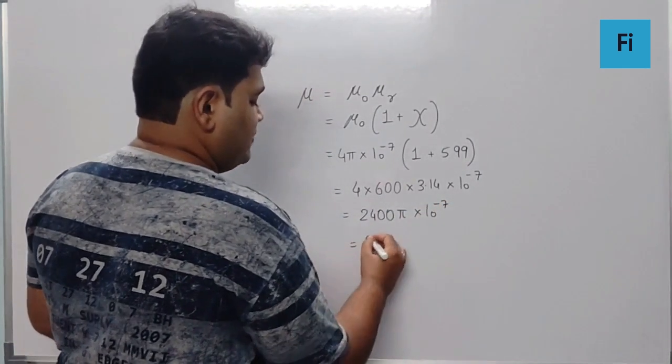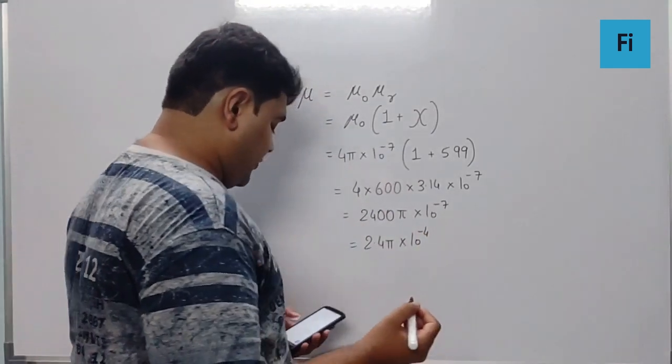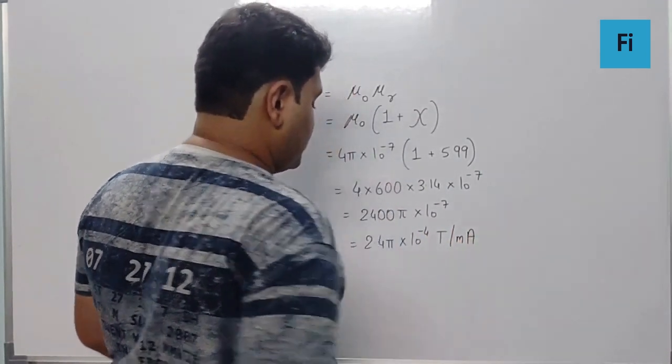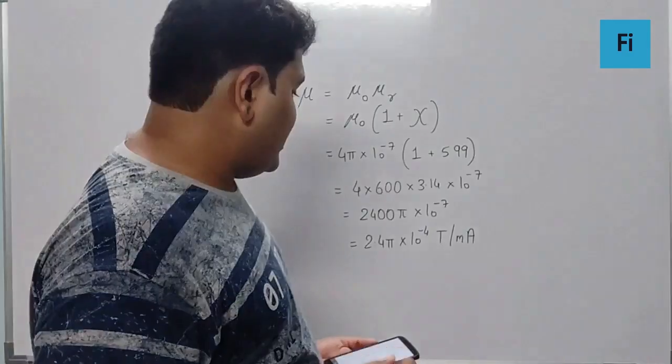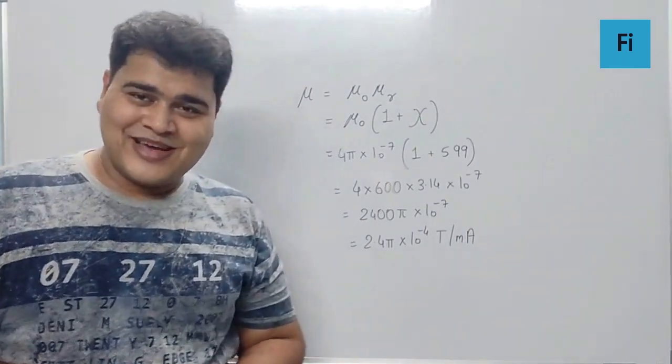which is equivalent to 2.4π × 10⁻⁴ tesla per milliampere. That's our answer: 2.4π × 10⁻⁴ tesla per milliampere. Thanks.